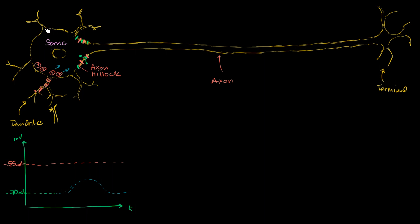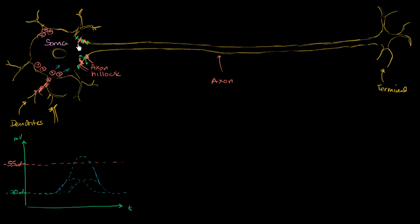Maybe that single stimulus by itself didn't trigger an action potential. But let's say there's another stimulus that happens at the same time. On its own, that second stimulus might have caused a similar small bump. But when you add the two together happening at the same time, their combined bumps are enough to trigger an action potential — or a series of action potentials — in the axon hillock. And so you've essentially fired the neuron.